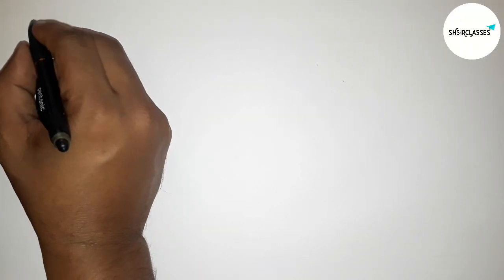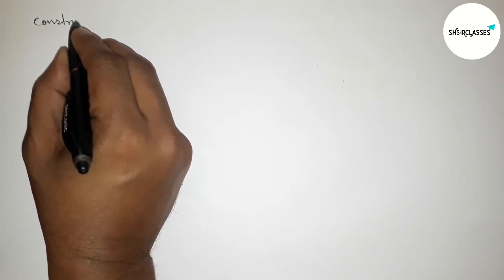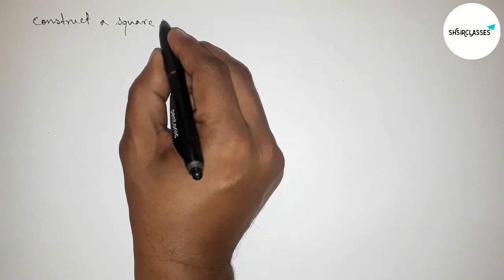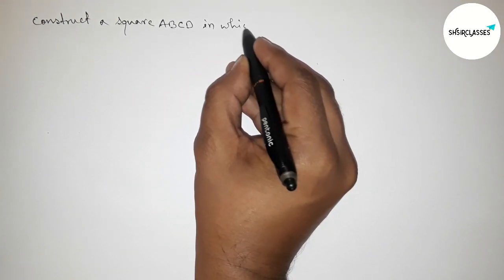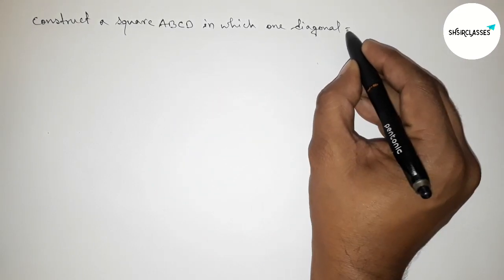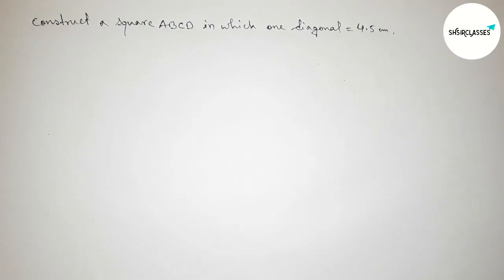Hi everyone, welcome to essay share classes. Today in this video we have to construct a square ABCD in which one diagonal equals to 4.5 centimeter. So please watch the video till the end. So let's start the video.